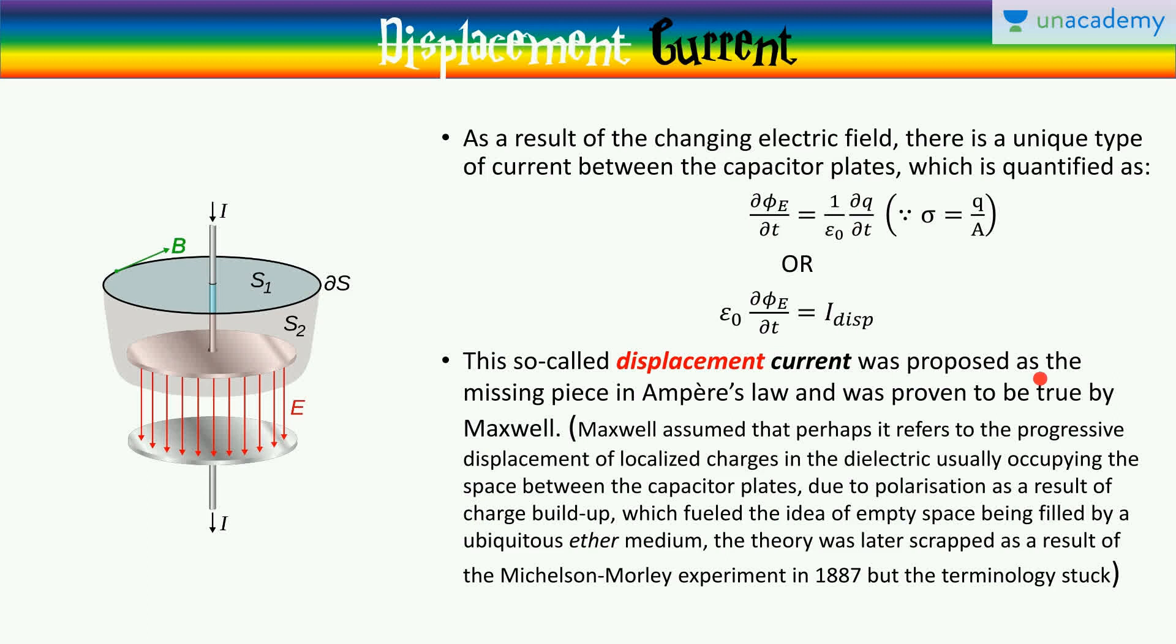Now, this was proposed as the missing piece in Ampere's law on the right hand side, in addition to the penetrating current in the wire. And it was proven to be true by Maxwell.